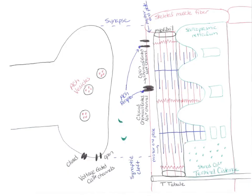We went over all the steps that initiate a muscle contraction. First, ACh is released and binds to the ACh receptors, generating action potentials inside the muscle. Then the action potential moves down the T-tubule, causing the terminal cisternae to release calcium into the sarcoplasmic reticulum, which causes the calcium to diffuse out and over those myofibrils. Then the calcium binds to those thin filaments, and then the contraction cycle begins.